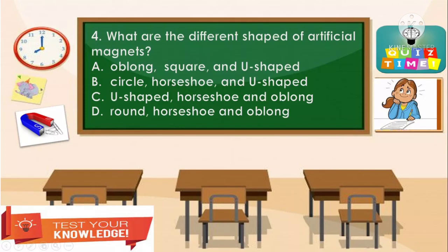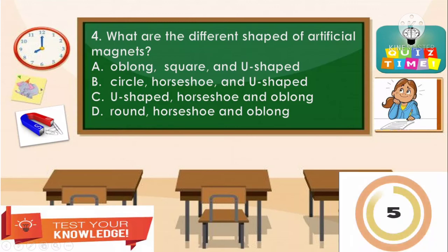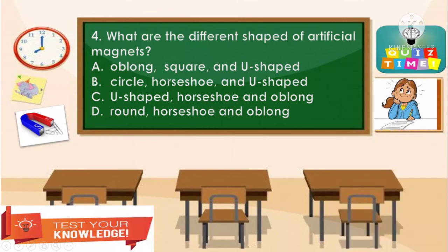Item number 4: What are the different shapes of artificial magnets? A. Oblong, square, and U-shape. B. Circle, horseshoe, and U-shape. C. U-shape, horseshoe, and oblong. D. Round, horseshoe, and oblong. The correct answer is letter B — circle, horseshoe, and U-shape.